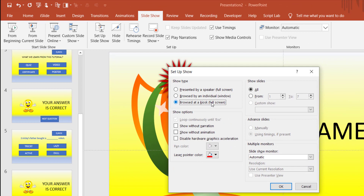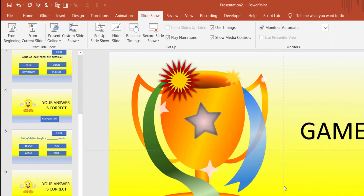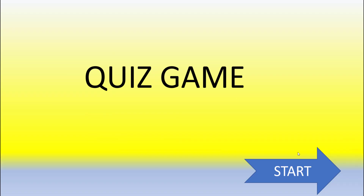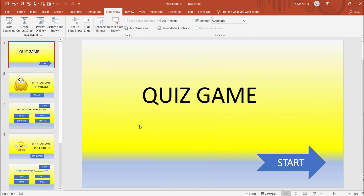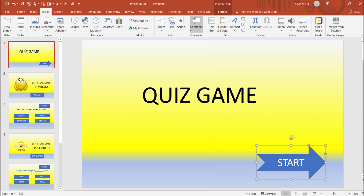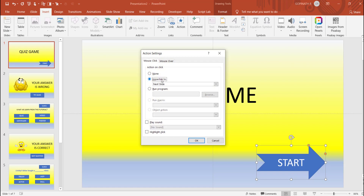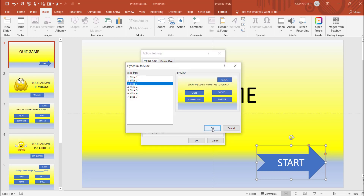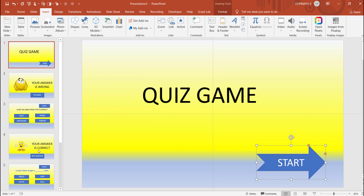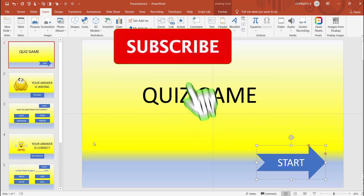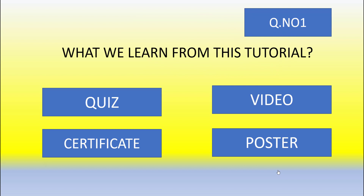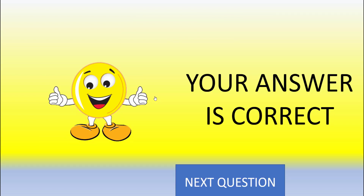Now click on the start button. Click on the next slide, third slide. Set up the select button. Set up the first question. We will try the first question. The first question is: what we learnt from this tutorial. Your answer is correct.